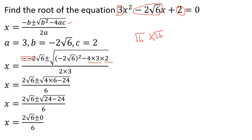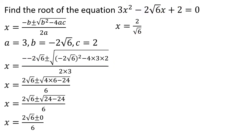We have root of 0 on the top, so 0 is equal to a real root. We have 2 root 6 divided by 2 root 6, which simplifies by cancelling, giving us the result.